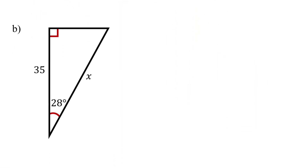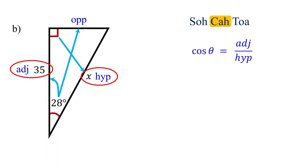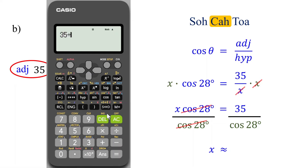Let's move on to the next example. Label the sides: opposite the right angle is the hypotenuse; opposite the 28-degree angle is the opposite side; the remaining side is the adjacent side. The adjacent side is given and we are asked to find the hypotenuse. According to SOHCAHTOA, it is the cosine function that relates these two sides. So cosine of 28 degrees equals 35 over x. To isolate x, multiply both sides by x, then divide both sides by cosine of 28 degrees. Using a calculator, 35 divided by cosine of 28 degrees is approximately equal to 39.64.